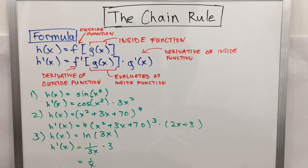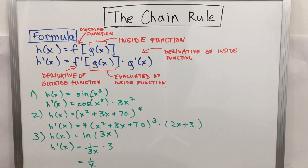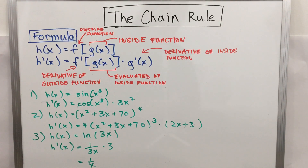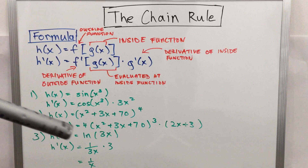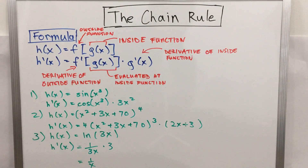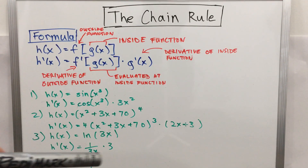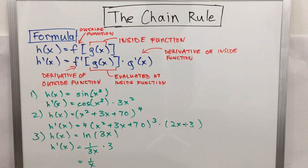Moving on to example number three: if h(x) = ln(3x), then differentiating gives h'(x) = 1/(3x) times 3. The 3s cancel out, and you're left with 1/x as the final answer.